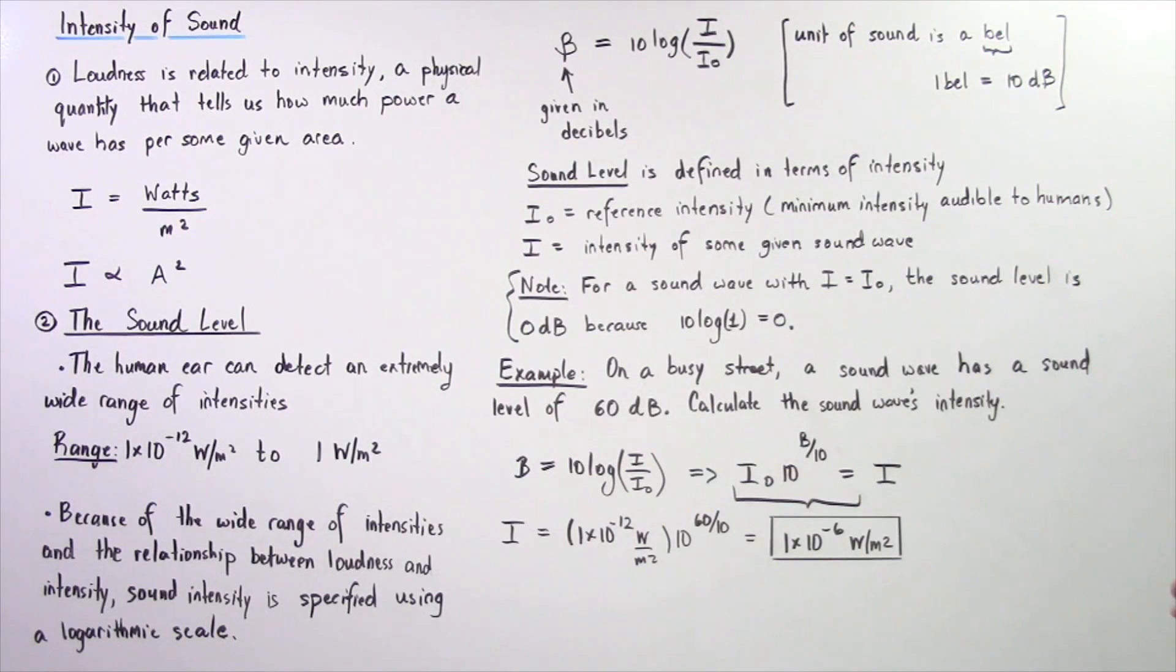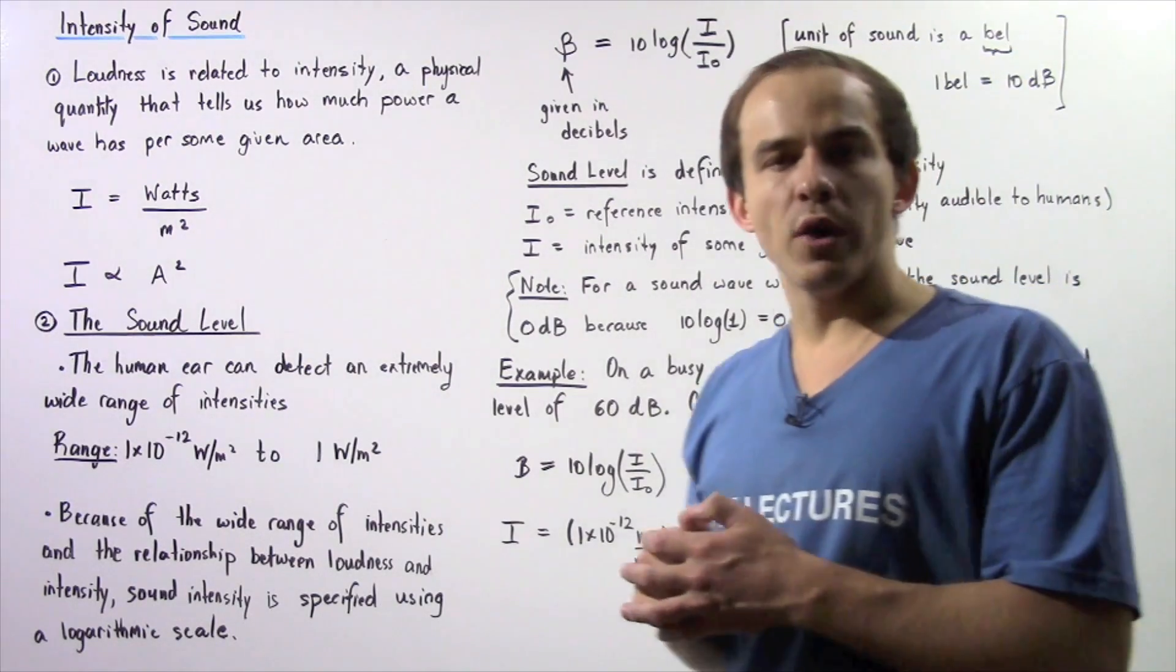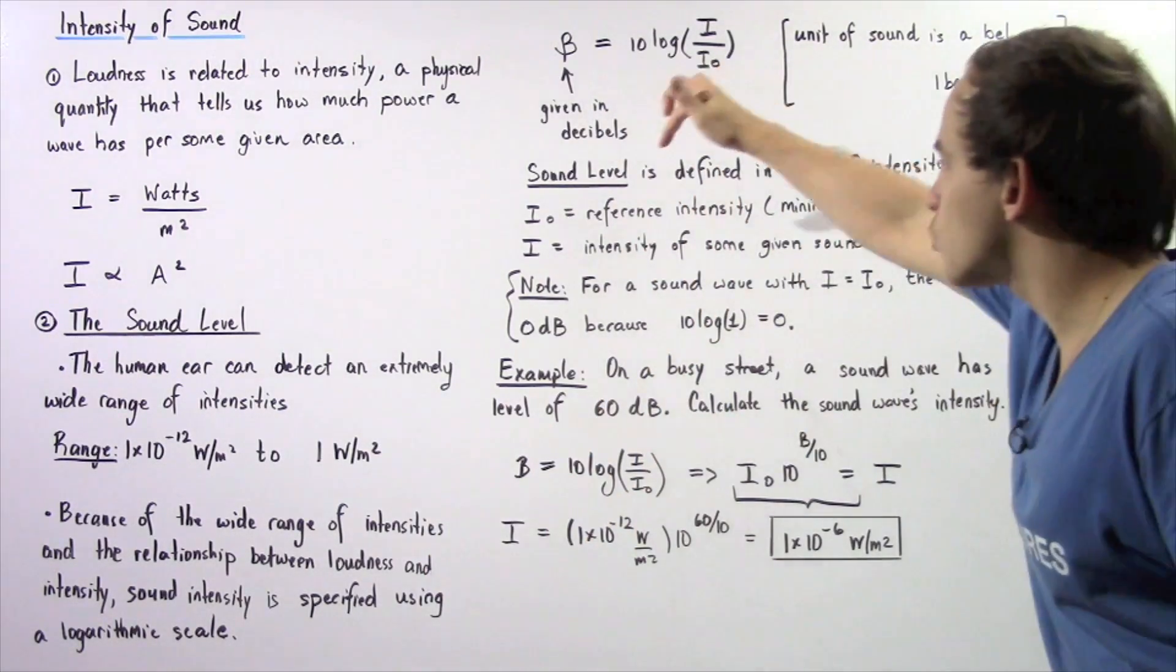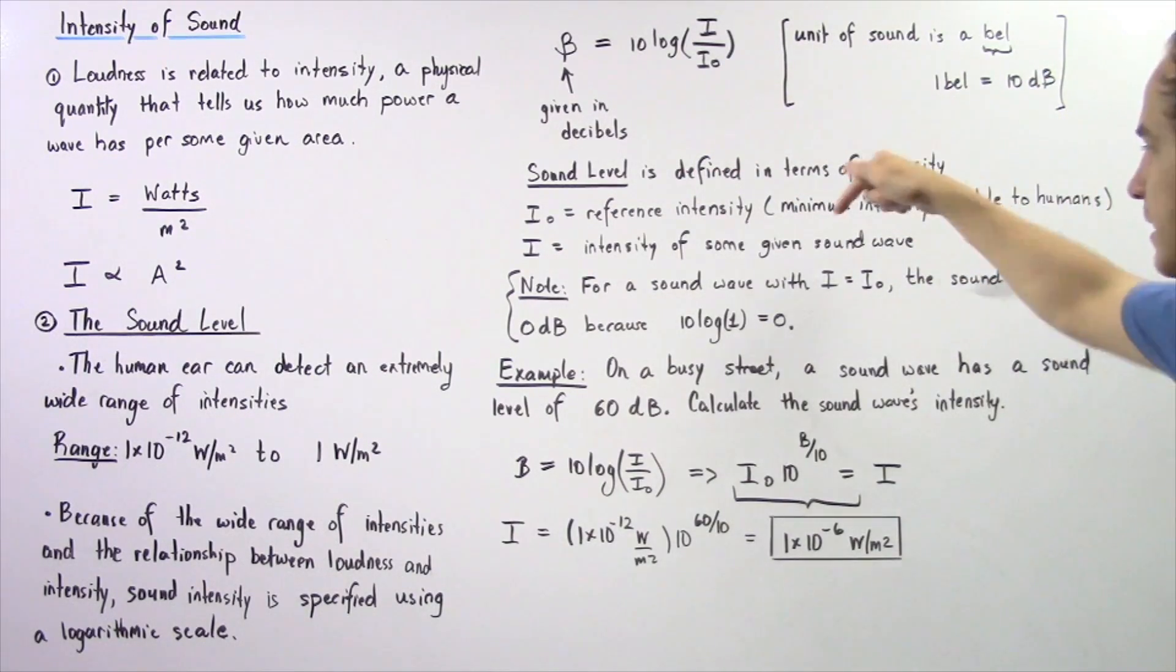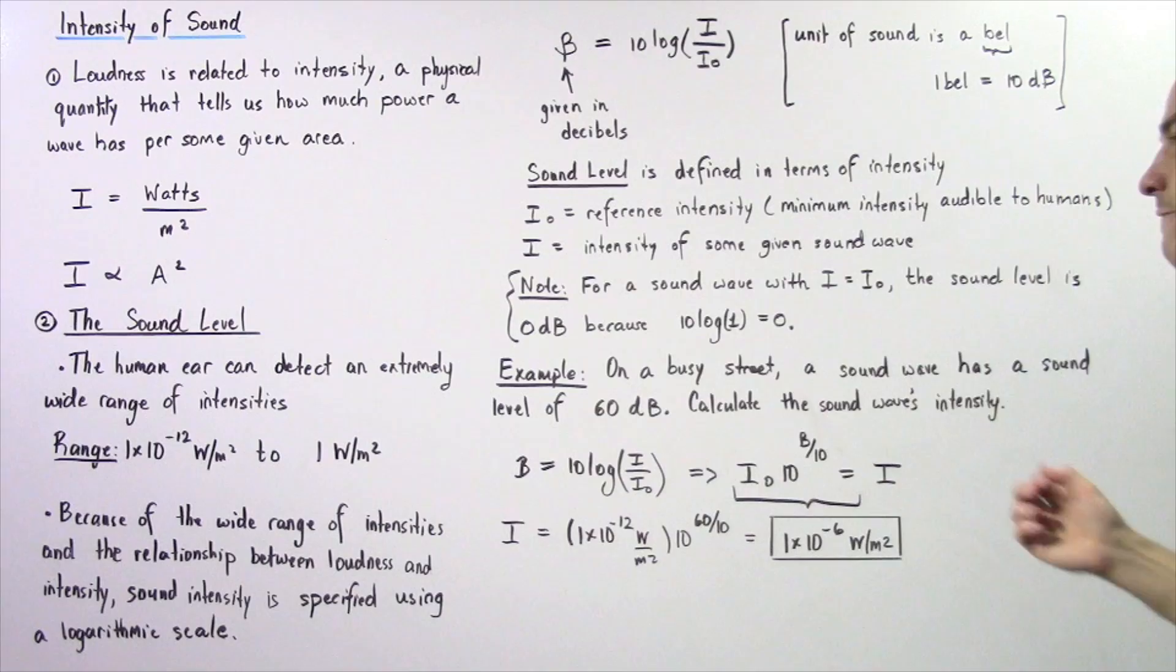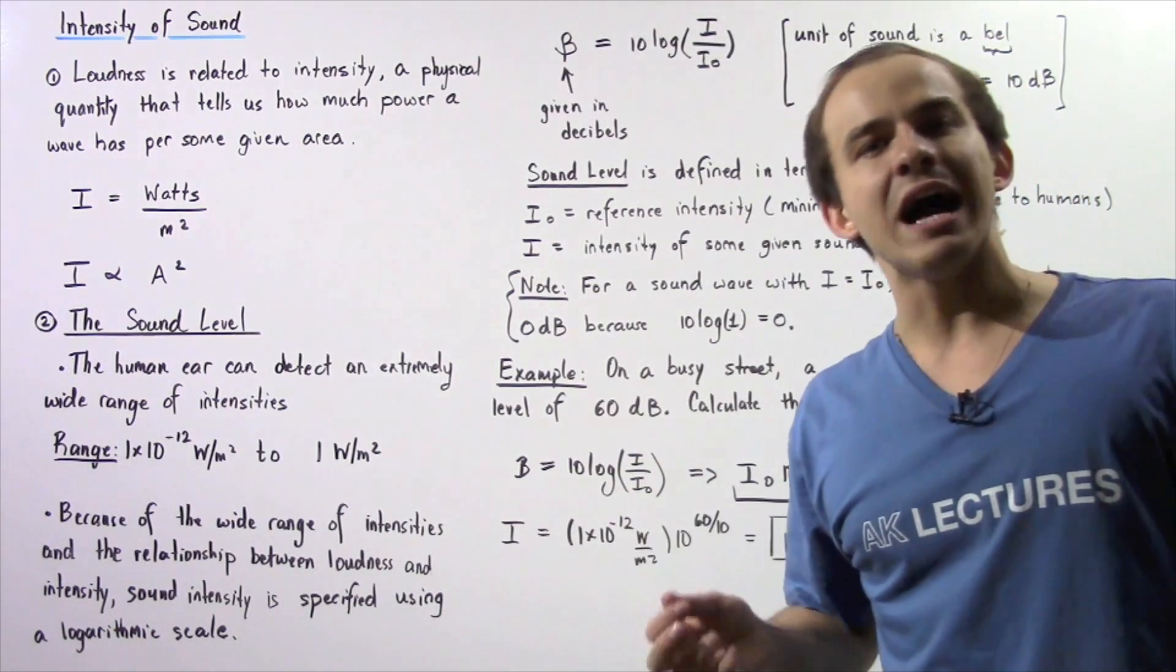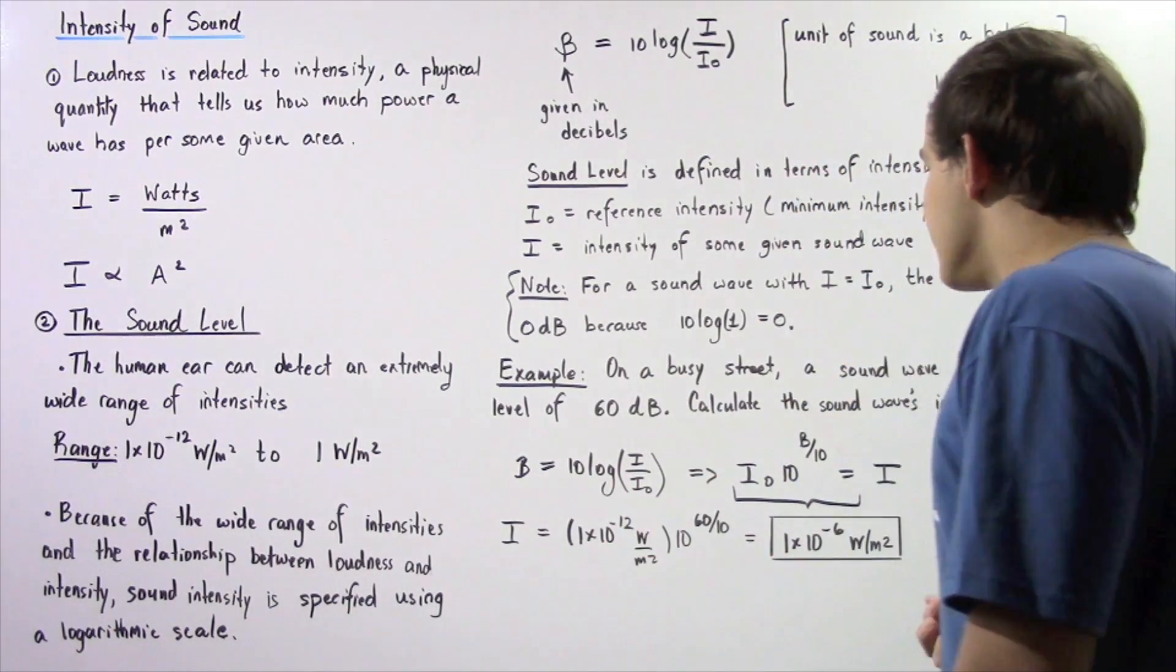Note the following: if we're examining a certain sound wave and that specific sound wave has an intensity that is equal to the reference intensity, in other words if I equals I₀, then the sound level is 0 decibels. That's because 10 times log of 1 is 0, because log of 1 is 0.